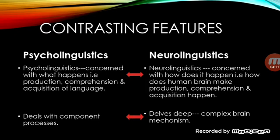Neurolinguistics delves deep into those complex brain mechanisms which are involved in language production and comprehension. These are a few contrasting features of psycholinguistics and neurolinguistics, which are quite helpful in understanding the essential nature of the two fields.